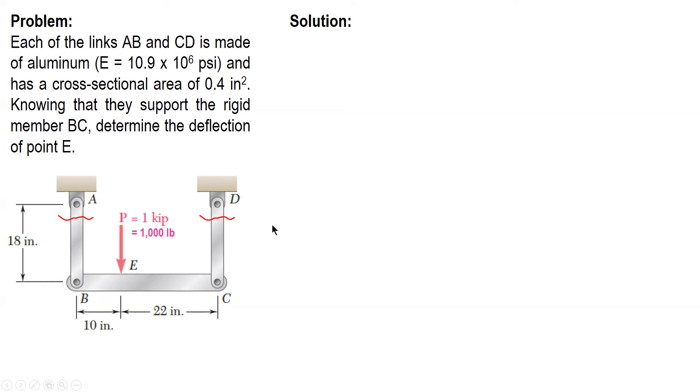So instead of starting with summation of force, we start with summation of moment since there are two unknown forces. If we sum up force vertical, we still can't solve it. So we will start with summation of moment. Now suppose, let's sum up moment about B. So the moment of P is clockwise. Therefore, in order to maintain equilibrium, the moment of CD must be counterclockwise. So therefore, the force CD must be upward.